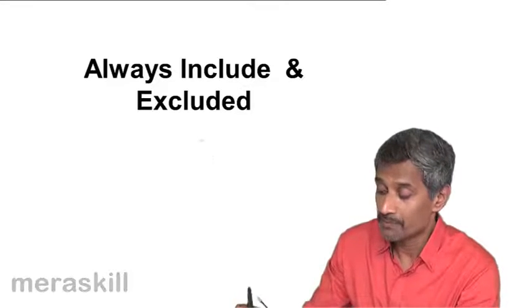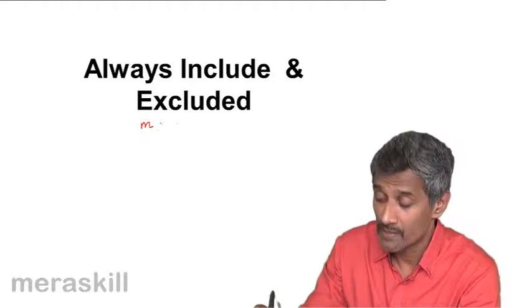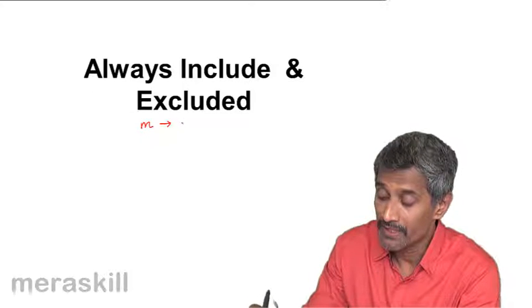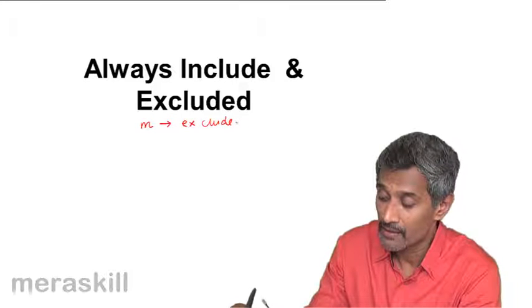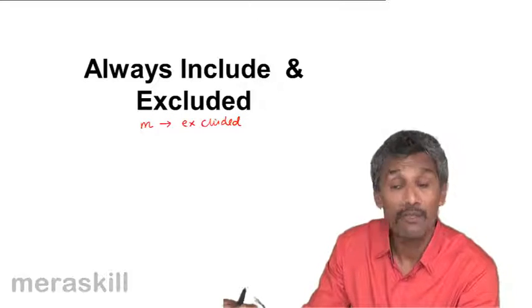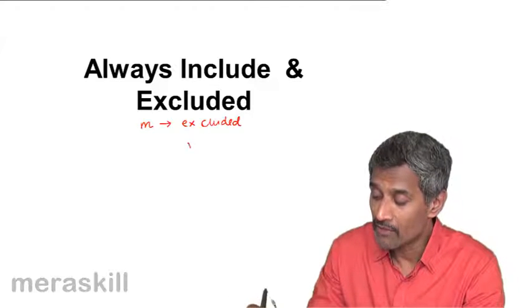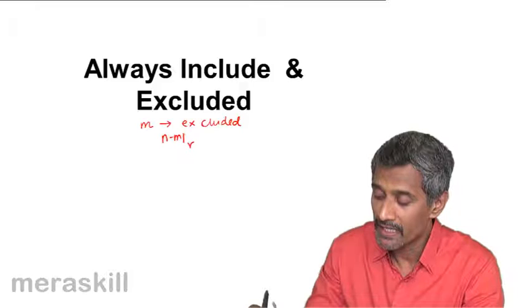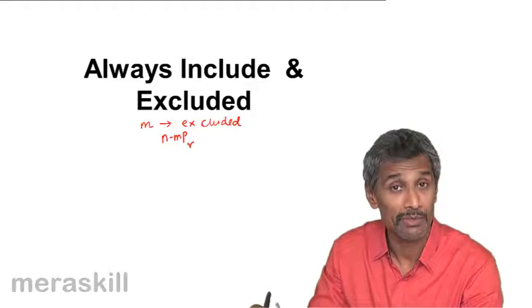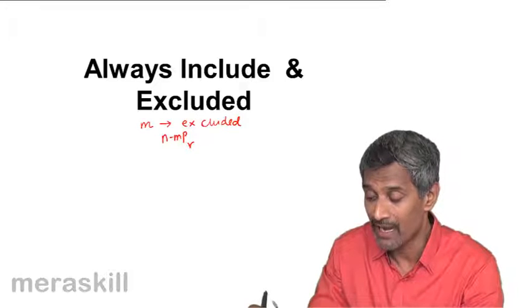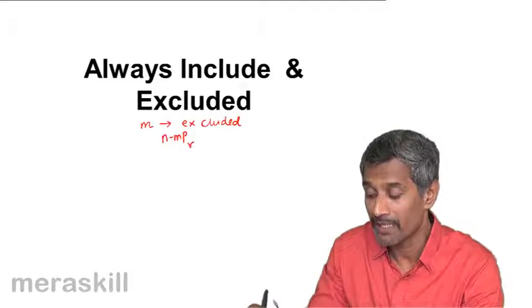If we revive that, suppose M terms have to be definitely excluded in case of a particular permutation. That means R of them have to be arranged out of N minus M. That means you need to choose R out of N terms, out of which M will not be included, so you choose them in N minus M P_R ways.